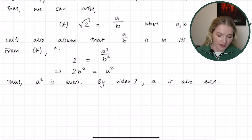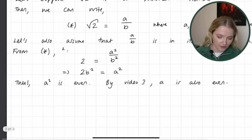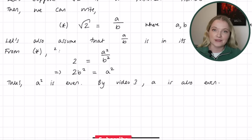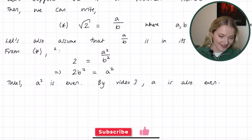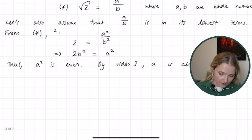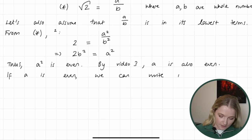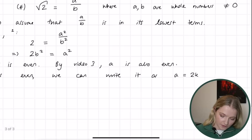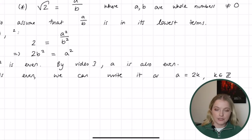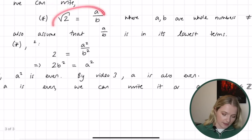The reason is that in the next video I prove that if a squared is even, then a must also be even. I'll omit that here but please note that this step does need to be proven — I'm saving it for video three to give you a reason to watch it! So we know that a is even, and we can write it as a equals 2k for some integer k.